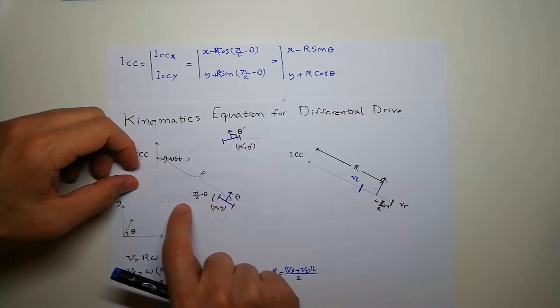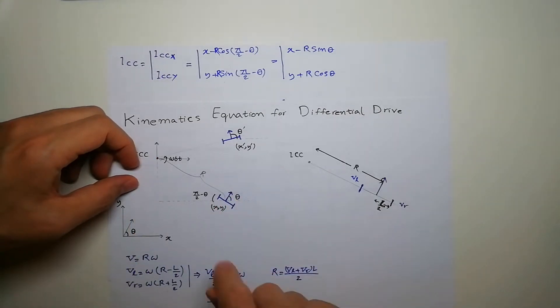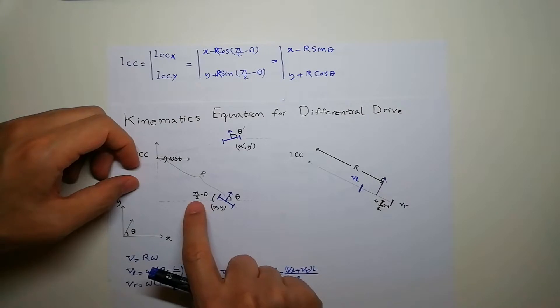If you imagine this triangle, this angle is theta, this is a complement so it's going to be half pi minus theta.